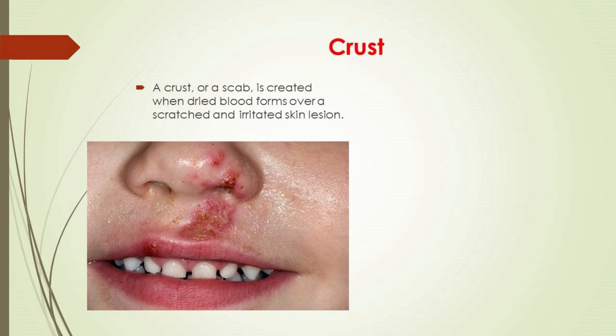Young children often get bacterial skin infections on their face and hands in the summer. The sores start out red and wet, then form a honey-colored crust — impetigo. It is easily spread by touch, either from the sores directly or from items they've touched like clothing and toys. Antibiotic cream, loosely covering sores, and lots of cleaning can stop the spread. Wash any broken skin, scrapes, cuts, and insect bites right away.